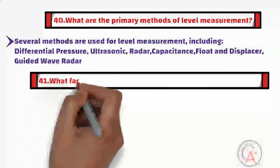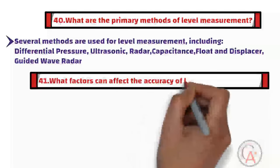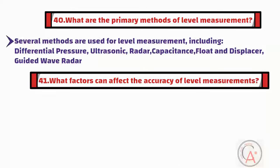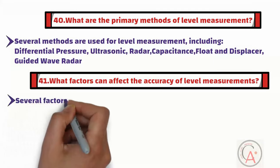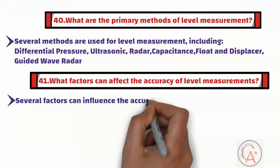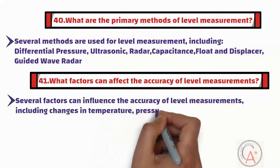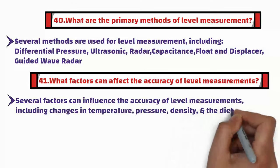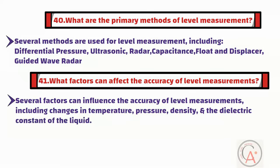Question forty-one is: what factors can affect the accuracy of level measurements? Several factors can influence the accuracy of level measurements, including changes in temperature, pressure, density, and the dielectric constant of the liquid. The vessel's geometry and the presence of foam or turbulence can also affect measurement accuracy.